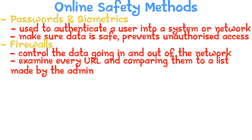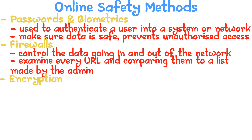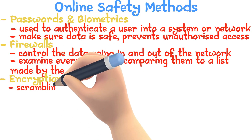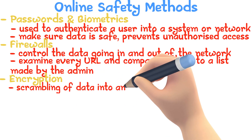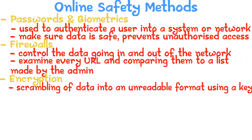Encryption means the scrambling of data into an unreadable format using a key. This key can again be used to unscramble the data and change it back to a meaningful form.